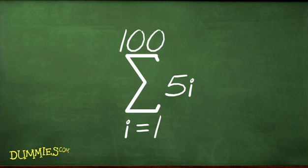That's 5 times 1 plus 5 times 2 plus 5 times 3 and so on, up to 5 times 100. It's the same thing as writing out the sum the long way.